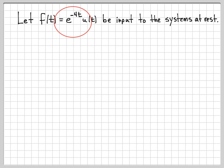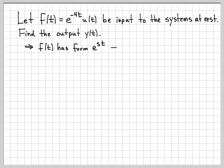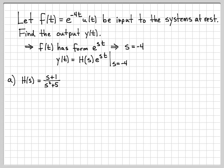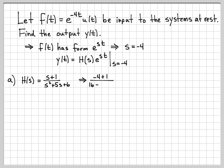I'm going to choose my input as e to the minus 4t, which has the form e to the st, and let's compute the output for the two different systems. Since f of t has the form e to the st, here s is equal to negative 4. For system A, this was our transfer function. I need to evaluate the transfer function at s equals negative 4, so I get minus 4 plus 1 over 16 minus 20 plus 6, which gives minus 1.5. So if I put e to the minus 4t into this first system, what comes out is simply minus 1.5 times the input.